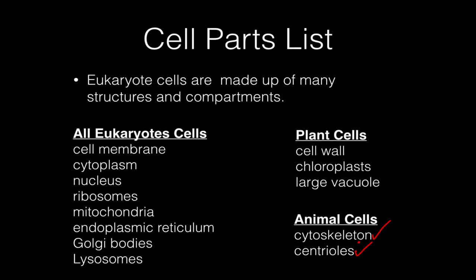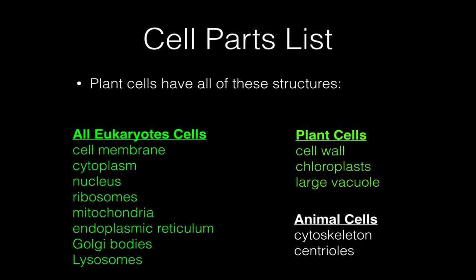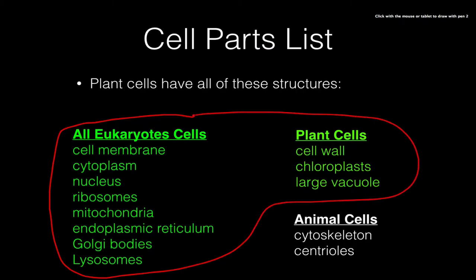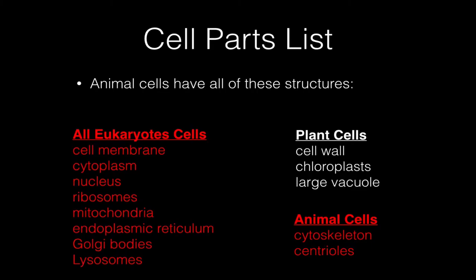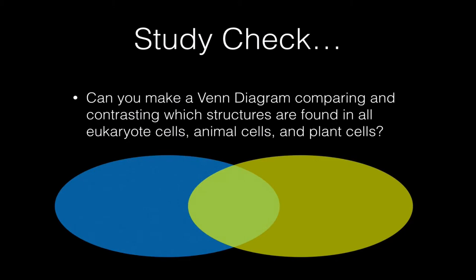If we look at animal cells, they have a couple of different parts that are very obvious and important. For example, the cytoskeleton, which is used for moving things around inside the cell or moving the entire cell, and structures called centrioles — both of which we're going to discuss later. Plant cells, because they are eukaryotes, have all the things common to eukaryote cells plus the things that are unique to plant cells. Animal cells similarly have all the parts found in eukaryote cells, plus some parts that are more important or easier to see in animal cells.